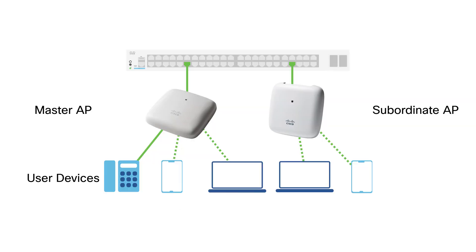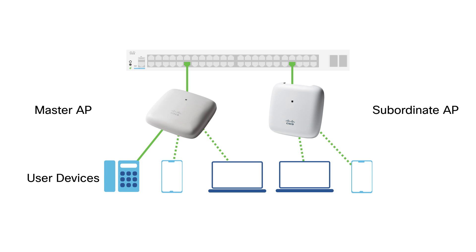In a wireless non-mesh deployment, the wired APs that aren't promoted to master APs are called subordinate APs. They play an important role when unexpected or scheduled outages disable the master AP. Subordinate APs are still master-capable and will elect and promote a new master AP to take over control of the wireless non-mesh network.